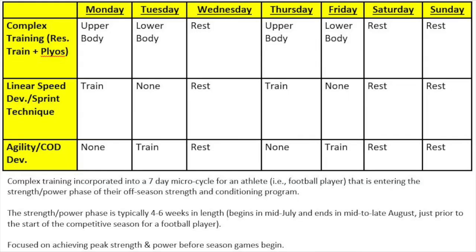The chart displayed here shows a weekly micro cycle for an athlete — a football player — entering the strength power phase of their off-season strength and conditioning program. The strength power phase is typically four to six weeks in length, often beginning in mid-July and ending in mid to late August, just prior to the start of the competitive season. Each week of training during this phase is focused on achieving peak strength and power to optimize athletic performance right before season games begin.